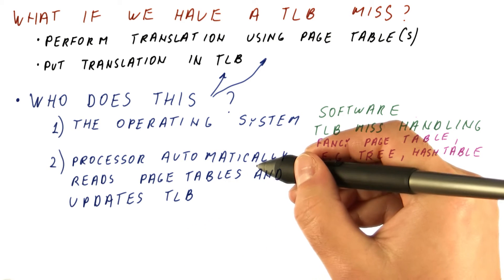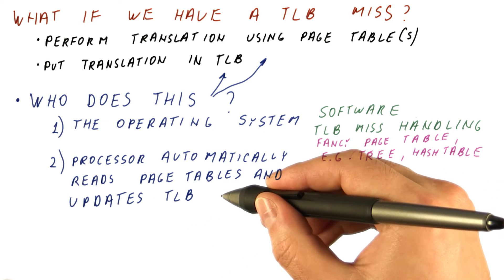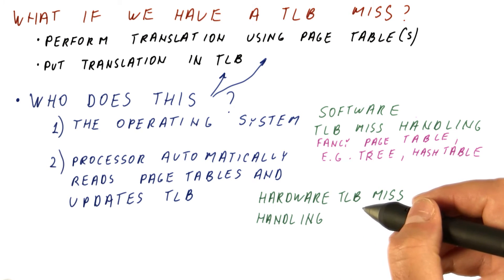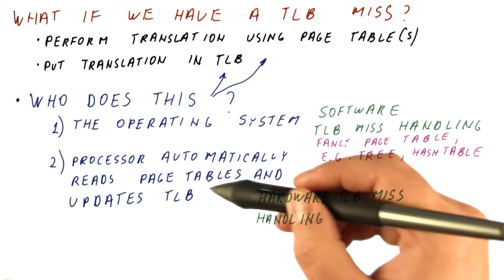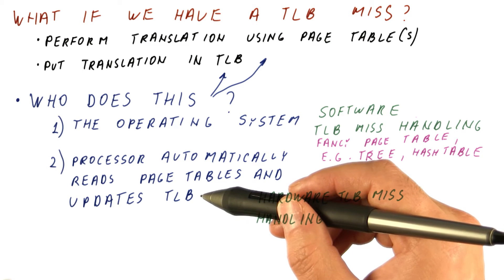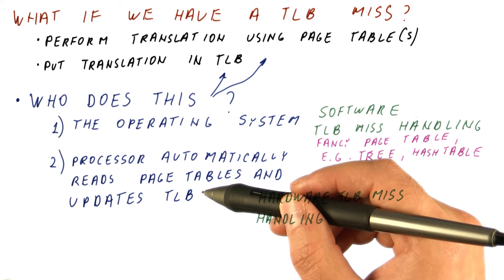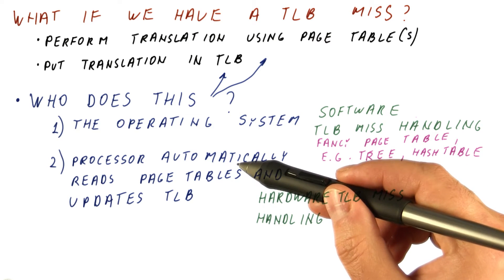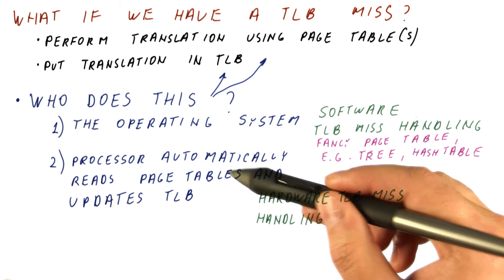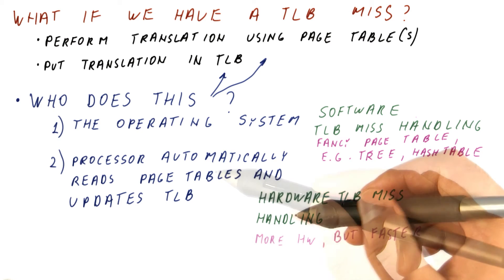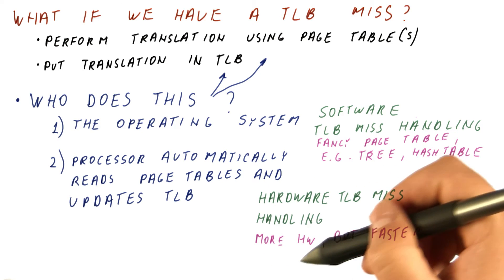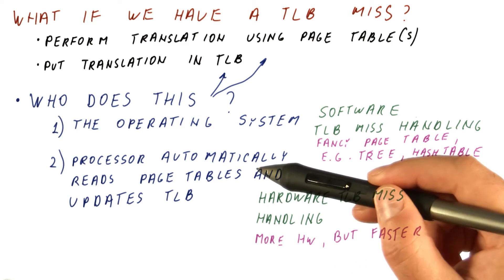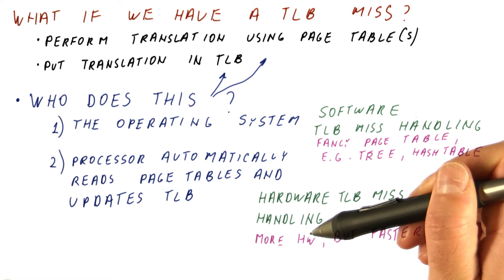The second option, where the processor automatically reads page tables and updates the TLB, is called hardware TLB mishandling. In this case, the page tables need to be in a form that is easily accessible by the hardware. So we will have a flat or a multi-level page table, like we have seen already in our previous videos. This approach does require more hardware, because the hardware now needs to actually be able to access the page tables and sequence the accesses to the multiple levels and so on.